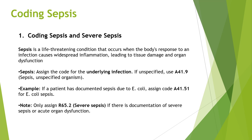Let's understand our first coding guideline for coding sepsis. Before that, what is sepsis? Sepsis is a life-threatening condition that occurs when the body's response to an infection causes widespread inflammation leading to tissue damage or organ dysfunction. While coding for sepsis, we have to assign the code for the underlying infection, and if the organism is unspecified, we will use A41.9.